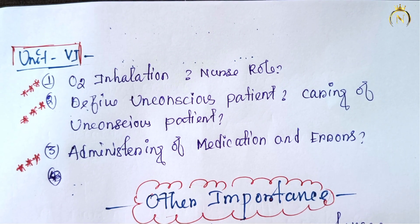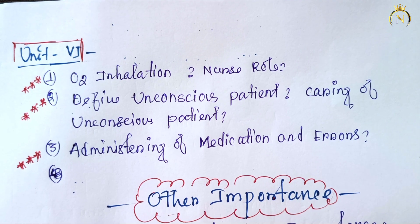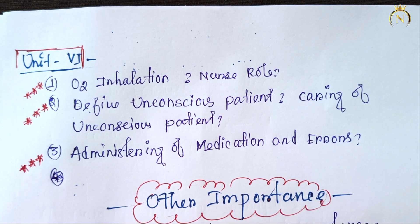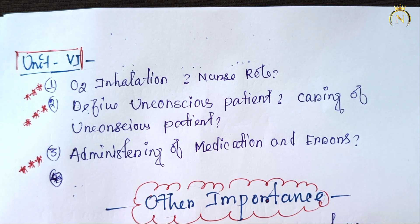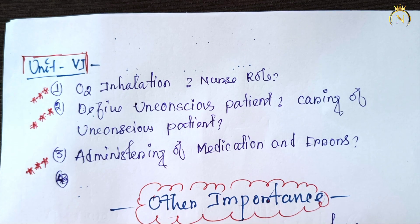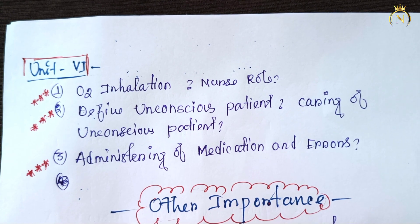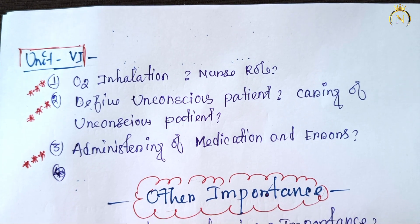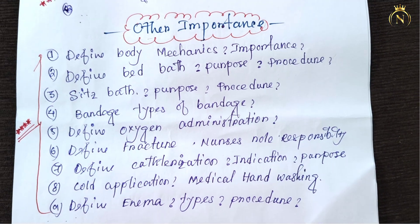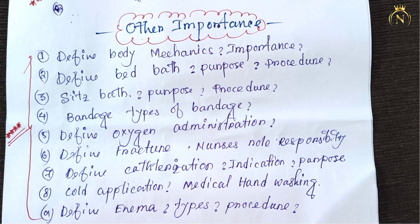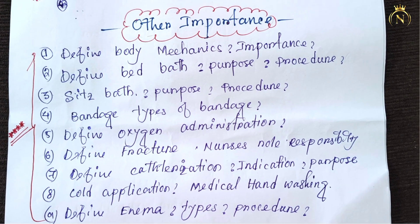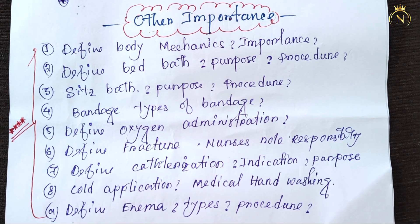From the last unit: oxygen inhalation or oxygen administration and the nurse's role in oxygen administration — most important question. Next, define the unconscious person and caring of the unconscious patient. If you check previous question papers, this question is repeatedly asked. Next, administering medication and errors — what are the routes of administering medication — this question is asking about routes of medications.